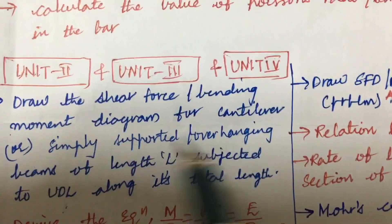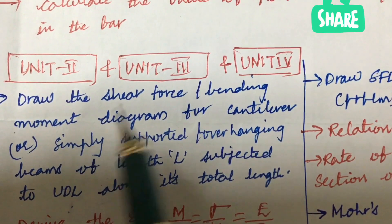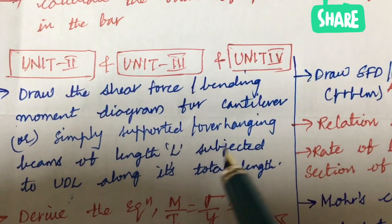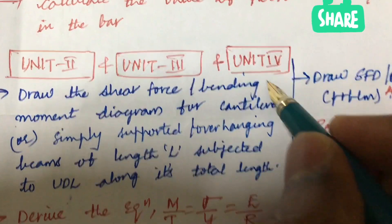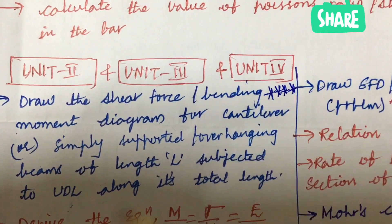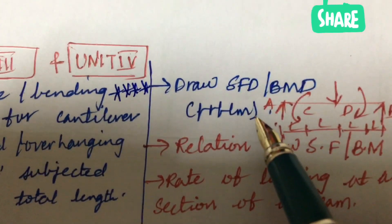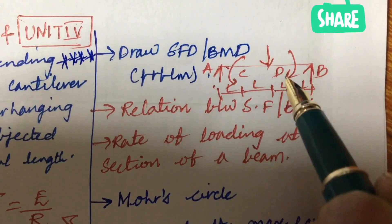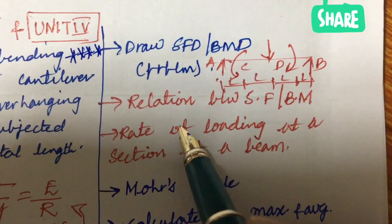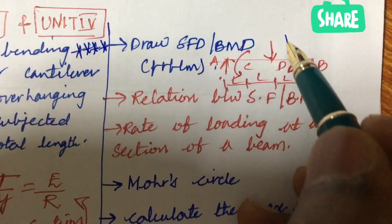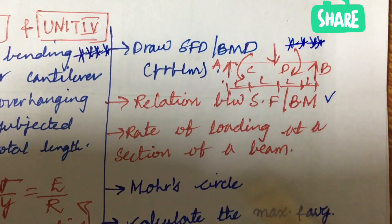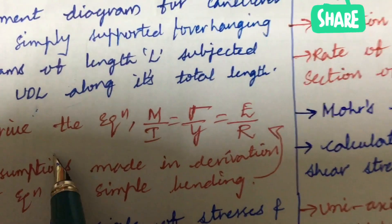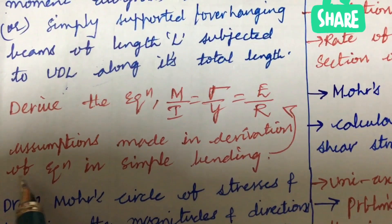A gunshot question is: draw the shear force and bending moment diagram for a cantilever, simply supported, or overhanging beam of length L subjected to UDL along its total length. Related to this concept you will definitely get a problem or derivation. Draw SFD and bending moment diagrams for cantilever or simply supported beams where the load acts exactly at the center. The relation between shear force and bending moment and the rate of loading at a section of a beam are also very important.